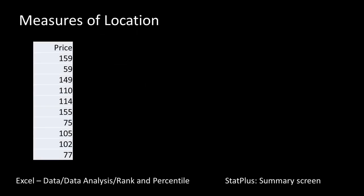Now let's turn our attention to some actual analysis and understanding of what is there. We've already looked at measures of central tendency — mean, median, and mode. Now there are also other things you'd like to understand about data, called measures of location. In other words, you want to find out how the values are actually distributed. It may not always be the case that values are uniformly distributed between maximum and minimum — in fact, often it is not the case.